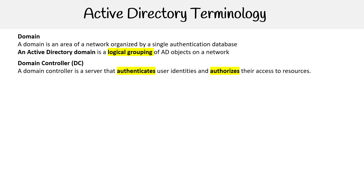Then you have a domain controller. A domain controller is a server that authenticates user identities and authorizes their access to resources. It's very common to have multiples of these, because you want redundant domain controllers — for availability, or so people can log in from different places using a nearby domain controller.